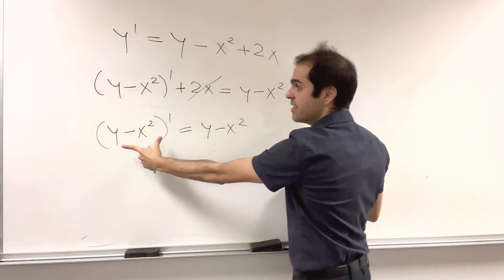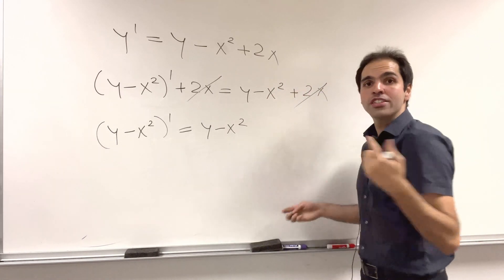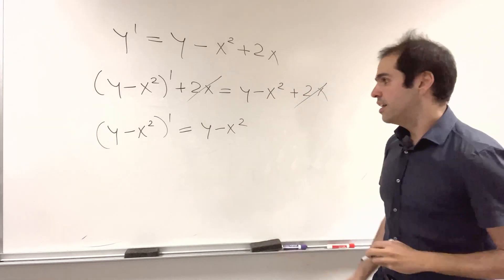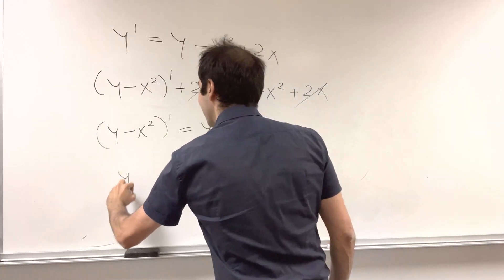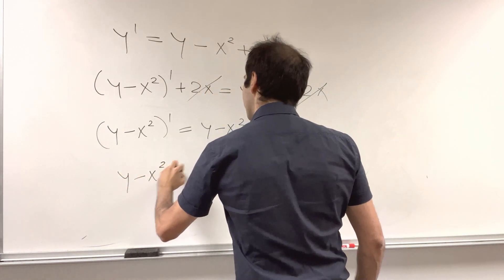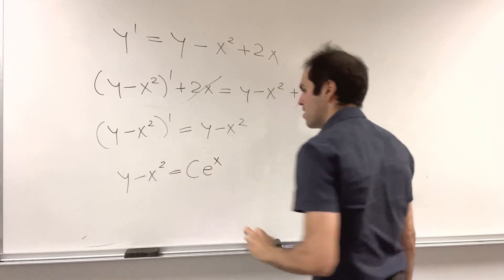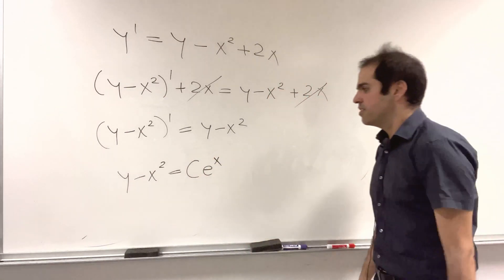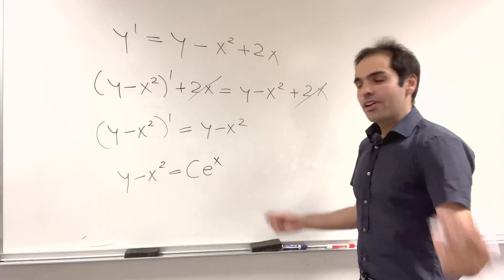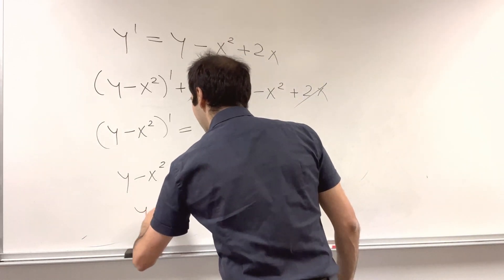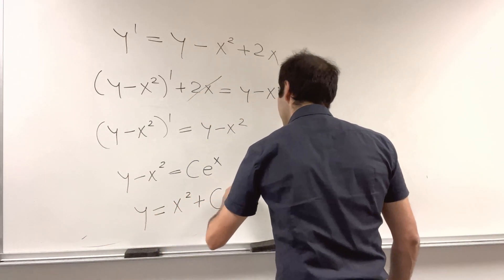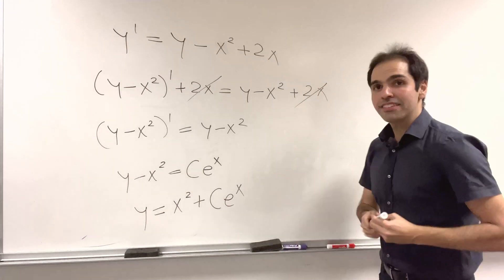But it says the derivative of this function is the function itself, and the only ones that satisfy this are constants of exponential function. Y minus x² is c·e^x. And so in particular, y is x² plus c·e^x.